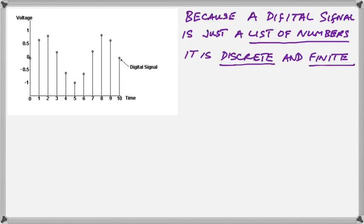Finally, because a digital signal is just a list of numbers, it is both discrete and finite. The list has a beginning, and it has an end. And in addition to that, there is no in-between. That's the meaning of the word discrete versus continuous.